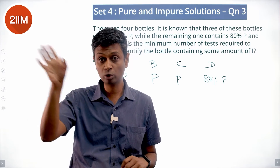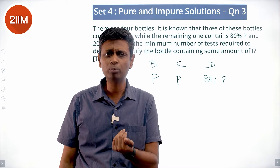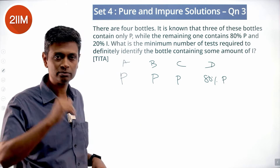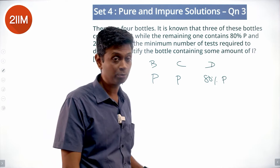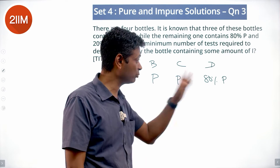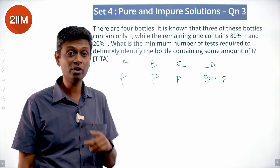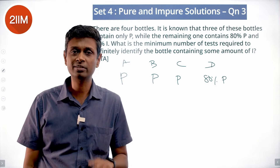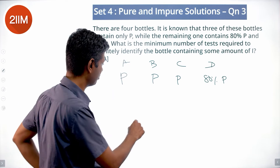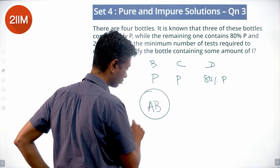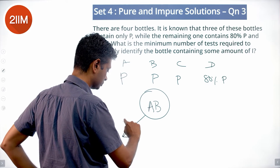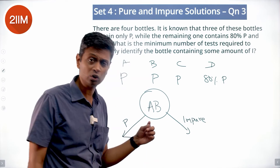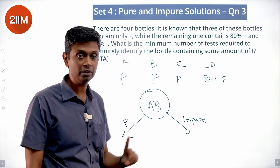No point putting all four together or three together — the result is already known to be below the detection threshold. If we take one at a time: test the first — pure; second — pure; third — pure; we can say the fourth is impure. But if we want to be foolproof, we need at least the minimum. The only possible option to do it with fewer tests is to test two bottles together — take A and B and test the mixture.